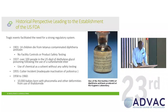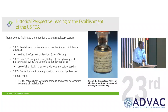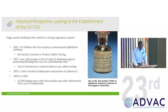Moving on to the historical perspective: generally, it takes a tragedy or a number of tragedies for governments to move forward and do something. Historically, there were a number of tragedies. People were doing whatever they wanted without any control — what we'd call in the U.S. the wild, wild west. In 1901, 14 children died of contaminated diphtheria — no facility controls, no product safety testing. In 1938, over 100 people died in the U.S. of diethylene glycol poisoning, a chemical solvent used without any safety testing. Then there was the Cutter incident in 1955, where inactivated polio virus vaccine was not properly inactivated, so kids got polio from the vaccine.